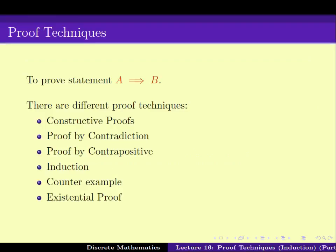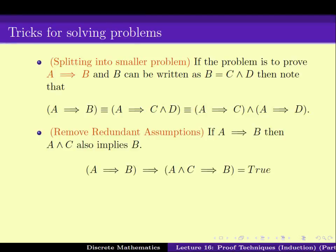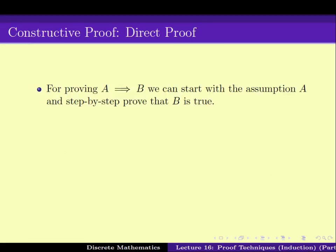A quick recap of what we have done till now. We have been studying various proof techniques for proving a statement like A implies B. We have seen some tricks about how to split a problem into smaller problems, or how removing some redundant assumptions can be helpful, or how sometimes proving something harder can actually be easier. We also looked at some proof techniques, namely the direct proof technique where you work with A and prove B.